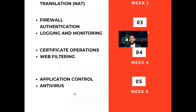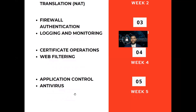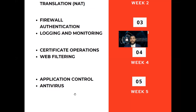In week five, we'll talk about application control. Even though you've allowed Facebook, for example, you may allow only viewing Facebook but not allow users to watch video or use Facebook Messenger to chat. So you can have minute control on how an application works and how it can be controlled for users in the corporate network accessing social media or other external applications. We'll also talk about network-based antivirus.